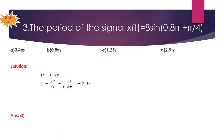Problem 3: Find the period of the signal x(t) = 8 sin(0.8πt + π/4). Here ω = 0.8π, so the fundamental period T = 2π/ω = 2π/(0.8π) = 2.5 seconds. Option D is the correct answer.